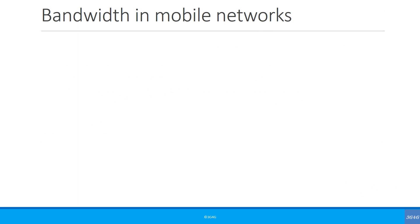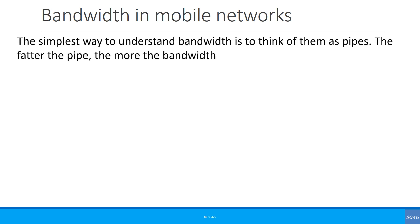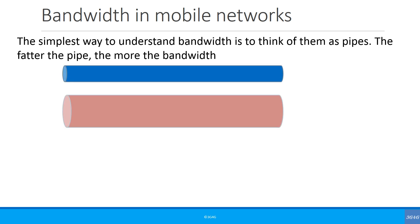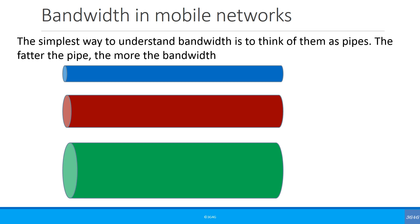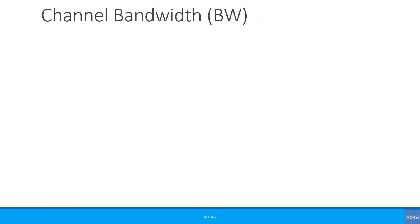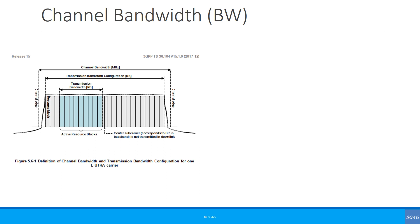Let's start with what bandwidth means in a mobile network. I tell people to visualize bandwidth as pipes — the wider the bandwidth, the fatter the pipe. The actual 3GPP term for bandwidth is the channel bandwidth, often written as simply BW.